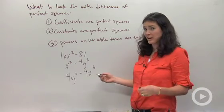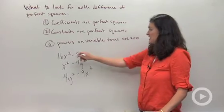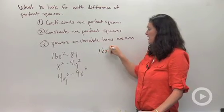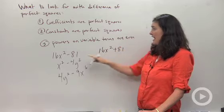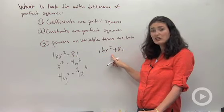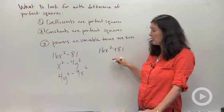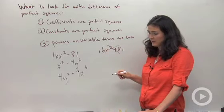I'm going to show you some that are not difference of perfect squares. Something like this: 16x² + 81. It's almost the same as this, only look, it's not a difference anymore, this is a sum. So this is not a difference of perfect squares.